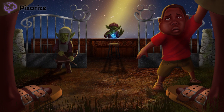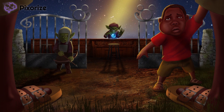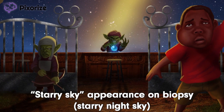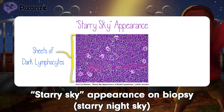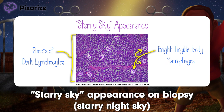It's a beautiful night to be out walking. Just take a look at that starry night sky. This starry sky helps me remember the starry sky appearance seen on biopsy of Burkitt lymphoma. Tumor samples under the microscope will consist of sheets of dark blue lymphocytes interspersed with tangible body macrophages. The brighter macrophages resemble stars against the dark lymphocyte background, creating a starry sky appearance. Tingible is just a fancy word for stainable — tangible body macrophages contain condensed chromatin visible with stains like the Giemsa stain. Just remember the starry sky appearance and you'll be set for about 90% of biopsy questions on Burkitt lymphoma.